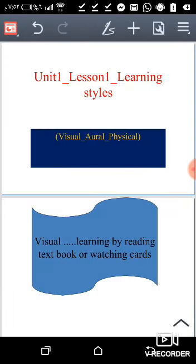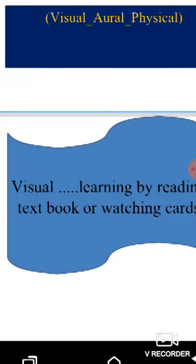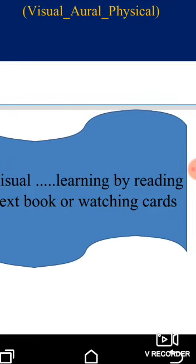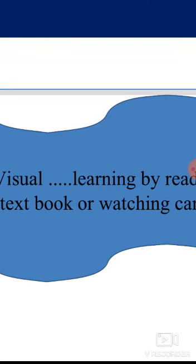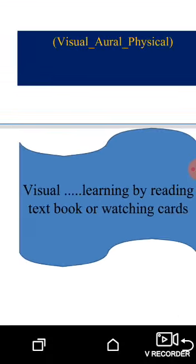We are talking about the learning styles, and we said we have visual, oral, and physical - three learning styles. Let's start with visual. Look here: visual is learning by reading textbooks. If you are a visual learner, visual means learning by reading textbooks, or watching cards, or watching videos.